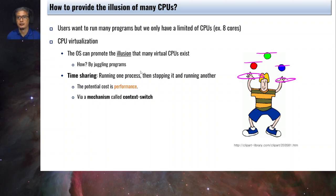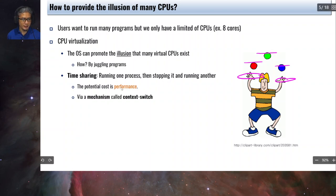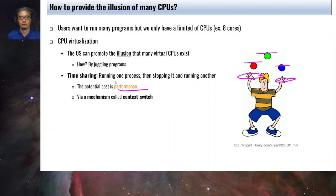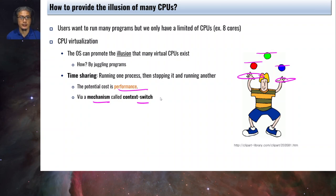The idea is you run one process, then stop that process after some time, and then run another process. Because of this time sharing scheme, it's possible to have some performance degradation. The juggler has to be quick and skilled to juggle three balls, which somehow limits performance. If there were only two balls, the juggler has no need to juggle and performance is very high. Moving from one process to another is accomplished through a mechanism called context switching, which we will discuss in detail in the next chapter.